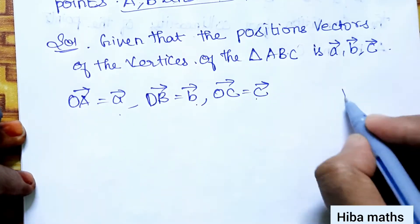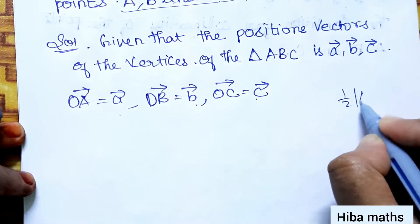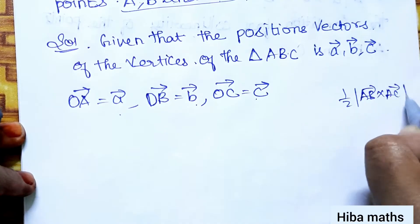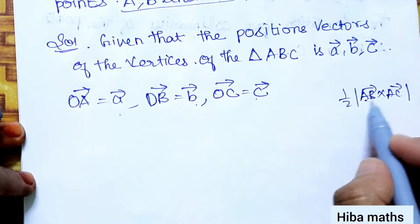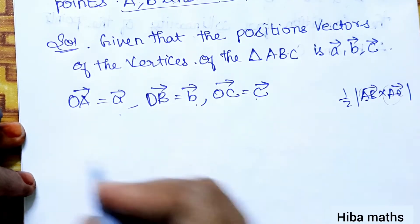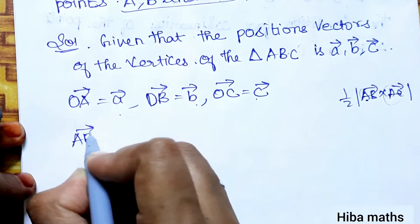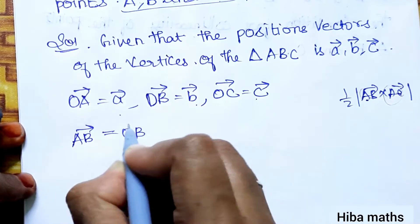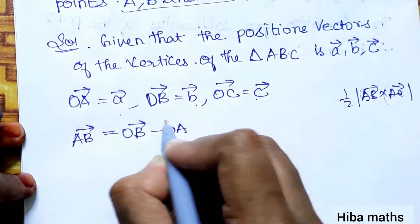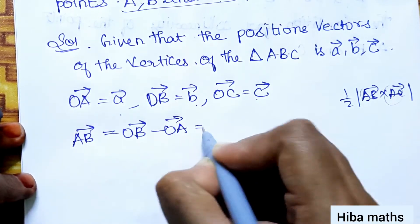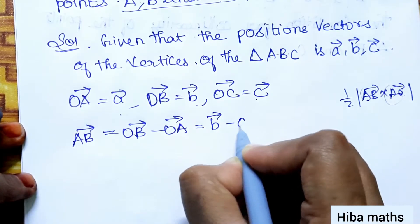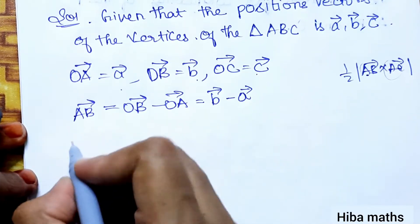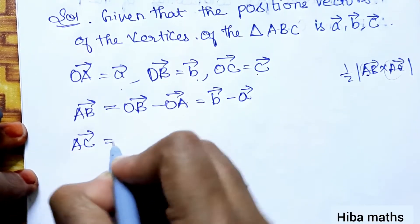The area of a triangle is 1/2 times |AB vector cross AC vector|. Now, AB vector = OB vector minus OA vector, that is B vector minus A vector. And AC vector = OC vector minus OA vector, that is C vector minus A vector.